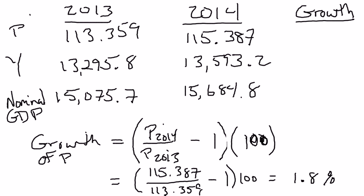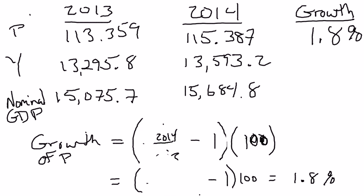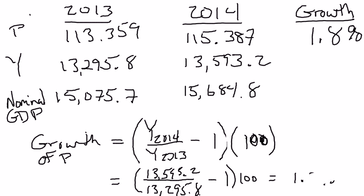All right. And there's nothing more to the calculation than just going ahead and doing that. So let me actually erase this over here. 1.8%. All right. Now if I was to go through and do exactly the same calculation for real GDP, instead of putting the price level, I would have the ending value of Y in 2014 divided by the beginning value of GDP in 2013. And when I go through and do my calculations, that's going to be 13,593.2 divided by 13,295.8. And if you go through and you do all the math, you should come up with 2.2%, okay?